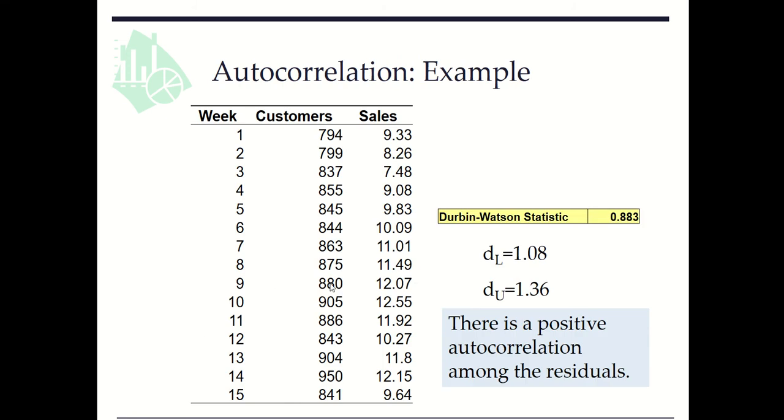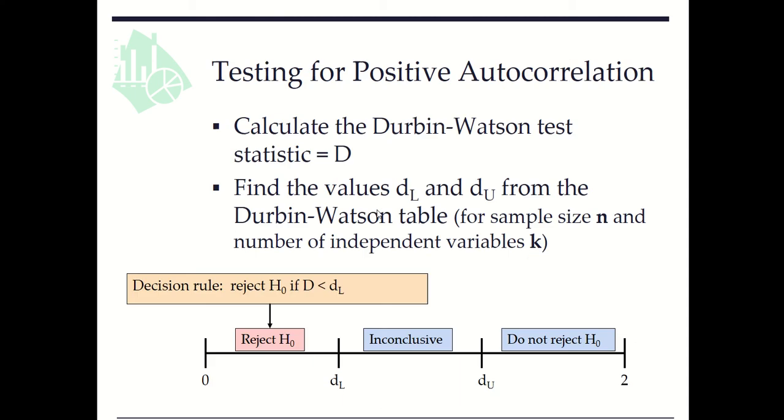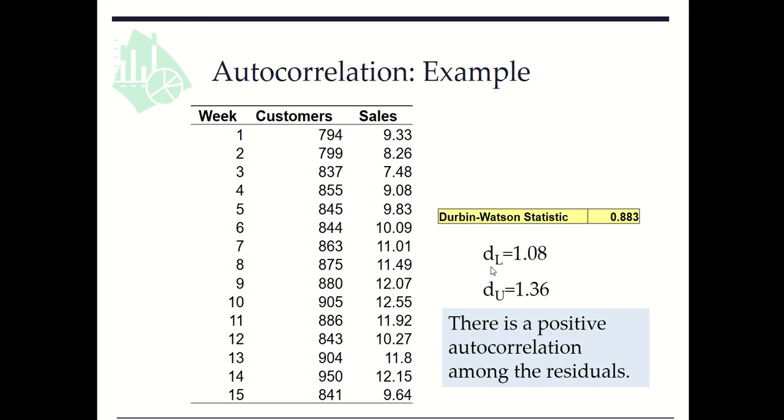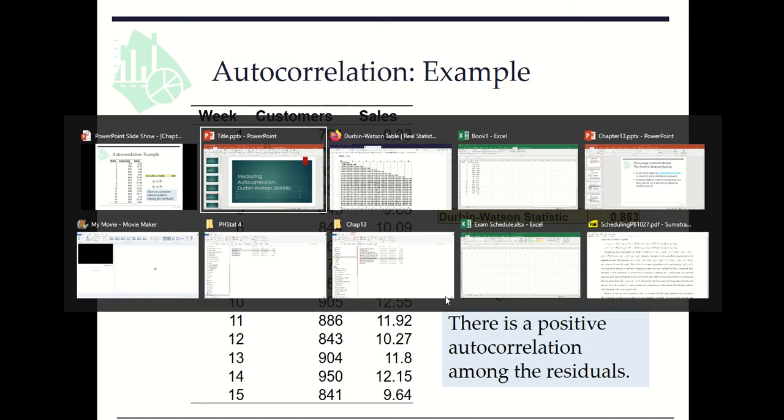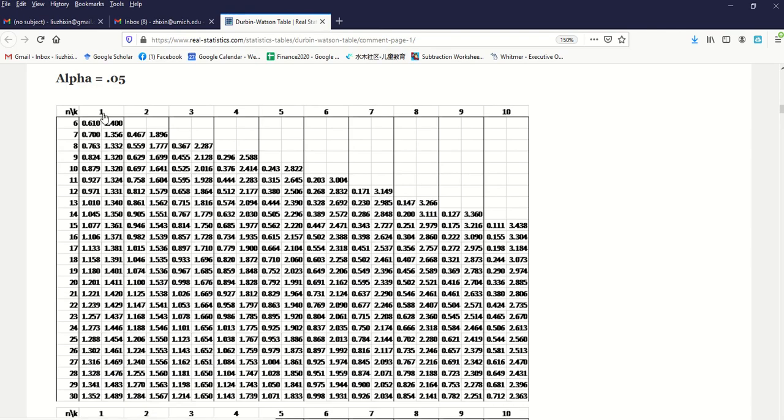Here we see one example. We have data collected over 15 weeks with number of customers and sales. We want to see how customers affect sales. We have sample size n = 15 and only one independent variable. We can locate dL and dU from the Durbin-Watson table with k = 1 and n = 15.